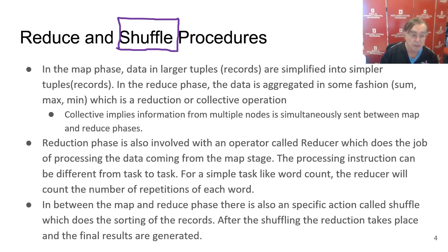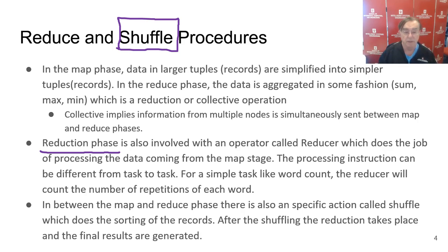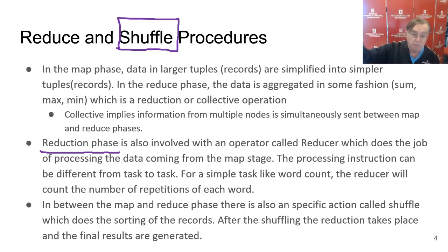If you're discovering the Higgs boson, the mapping phase is looking at all the data taken at the CERN accelerator, identifying events that could have been produced by Higgs bosons, and categorizing the properties of those events as histogram entries. Then the reduction phase is taking all those histogram entries and adding them up to get a histogram where we will see a nice bump where the Higgs boson is.